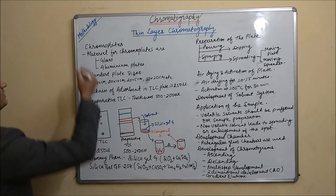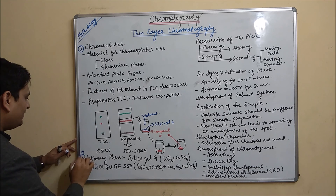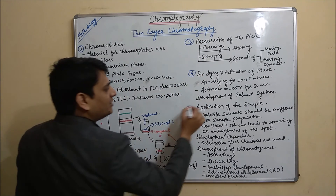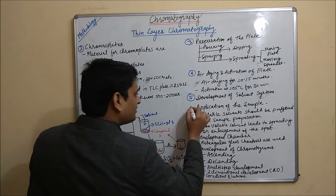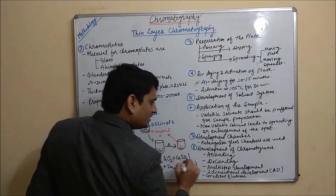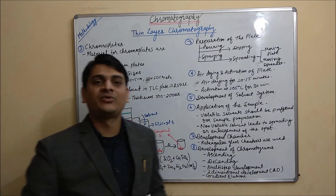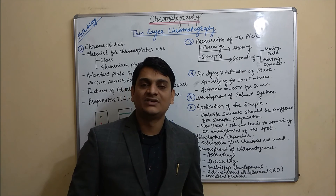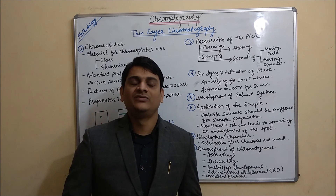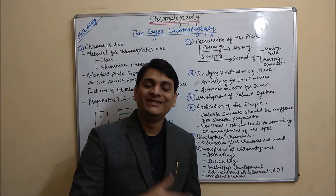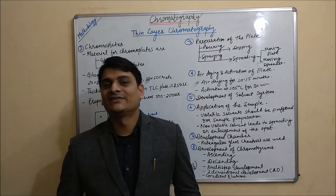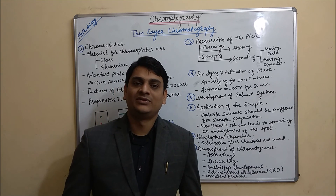The steps of TLC methodology include: first, chromoplates; second, preparation of plates; and further steps covering development chamber, development of the chromatograms. After development of chromatograms, we have to visualize our spots by using various methods, and after visualizing our spots, we have to evaluate our chromoplates — it may be qualitative analysis or quantitative analysis. In the next video, I am going to discuss about various visualizing agents which can be used in thin layer chromatography. Thank you.